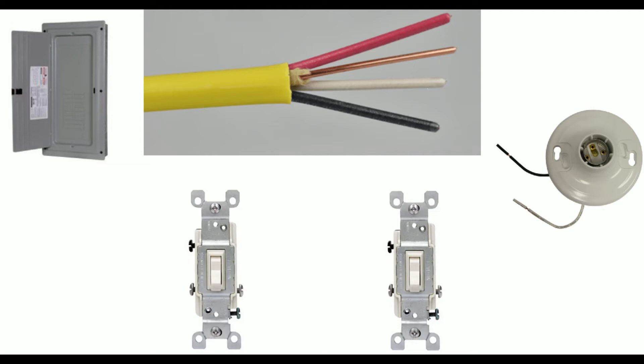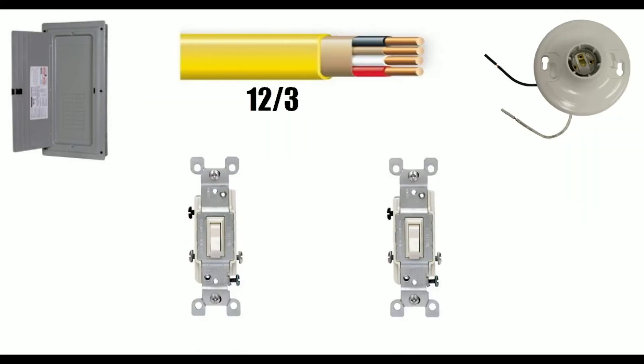This is 12-3 Romex. You'll notice it has an extra conductor being the red. The blue outlines are going to represent the electrical boxes, and we're just going to draw from point to point and just give you what you need to know.